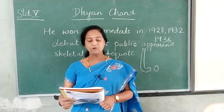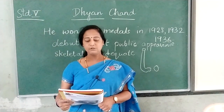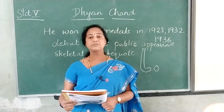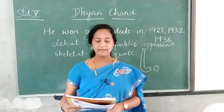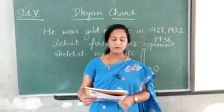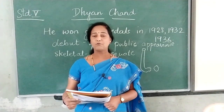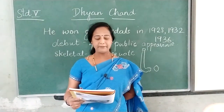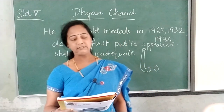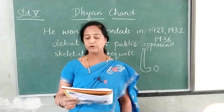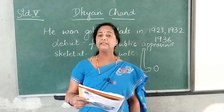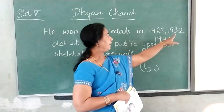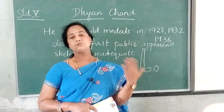Dhyan Chand was born on 29th August 1905 and passed away on 3rd December 1979. He was a well-known Indian field hockey player, widely regarded as one of the greatest players of all time. He is remembered even today for his goal-scoring feats and his three Olympic gold medals in 1928, 1932, and 1936, during an era when India was dominant in the sport.